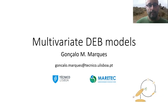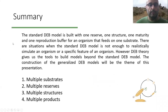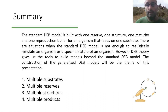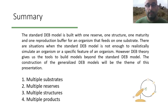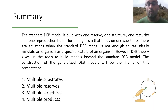Let's start by posing the situation. In the standard DEB model, we have a model where we have one reserve, one structure, one maturity, one reproduction buffer, and the organism usually feeds on one substrate. But there are situations where you might want to model something that needs more than just one state variable of each type.